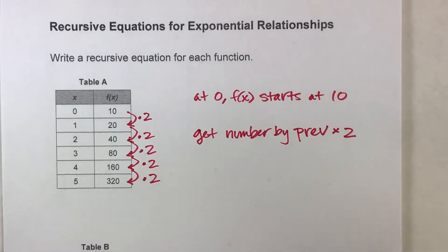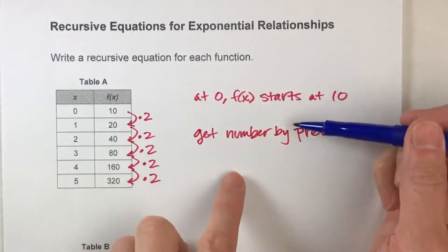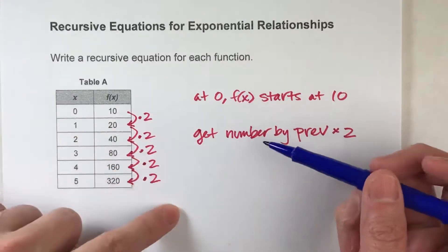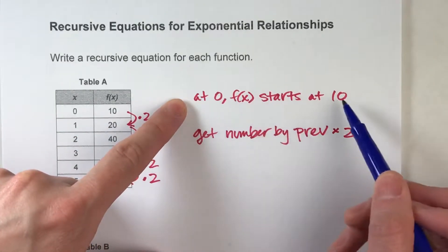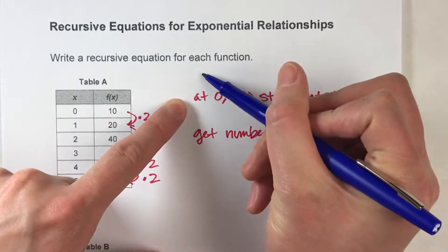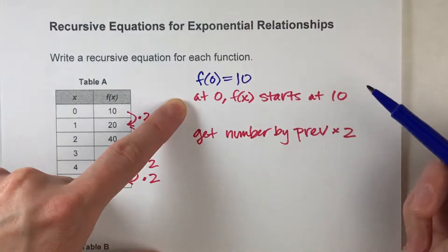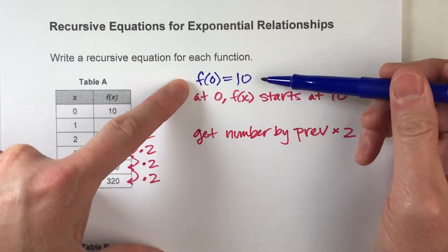Now, to write the recursive equation, all we have to do is take these two parts and write them in algebraic form. For example, if we know at zero, f of x starts at 10, we know that f of zero equals 10. And that's the first part of our recursive equation.